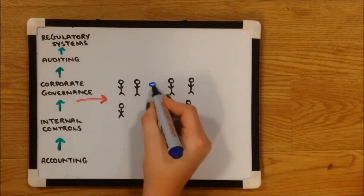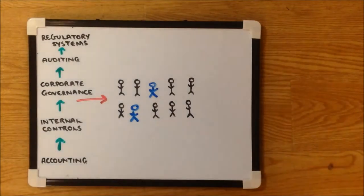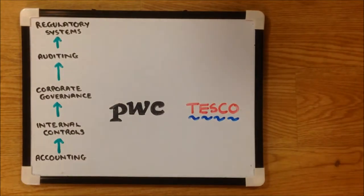Two, including the chair of the board, were ex-PWC employees. This shows a breach of independence. The next level of the hierarchy is auditing.